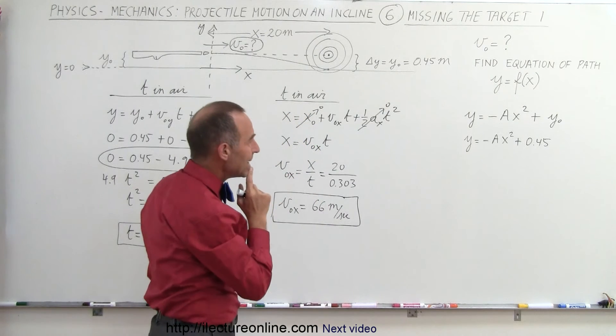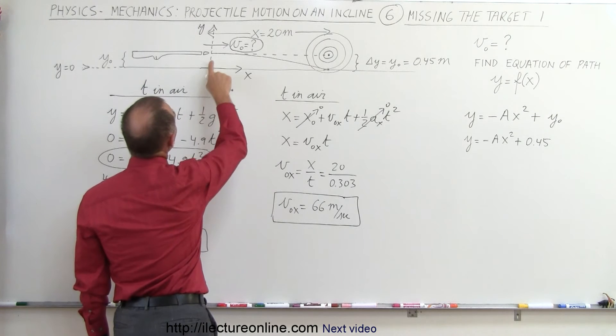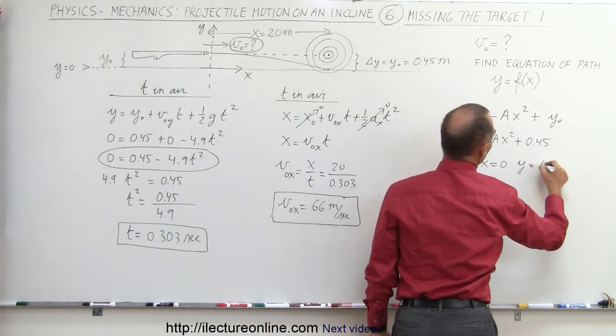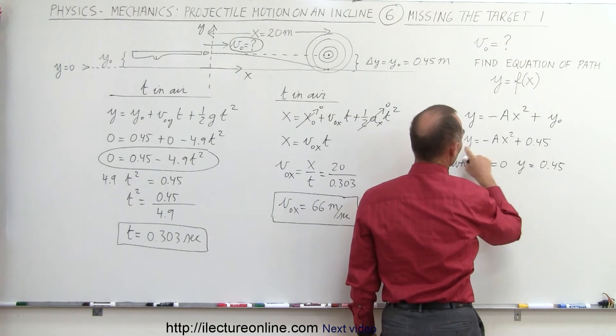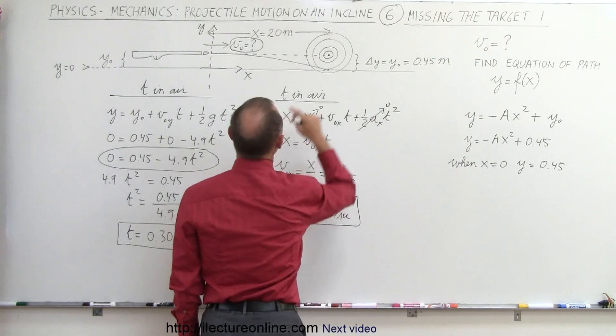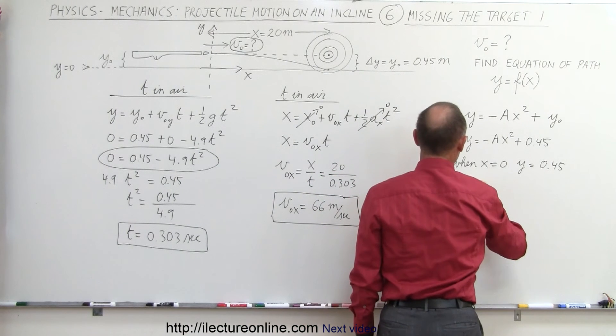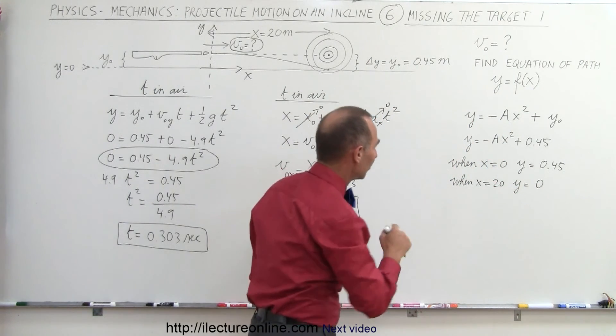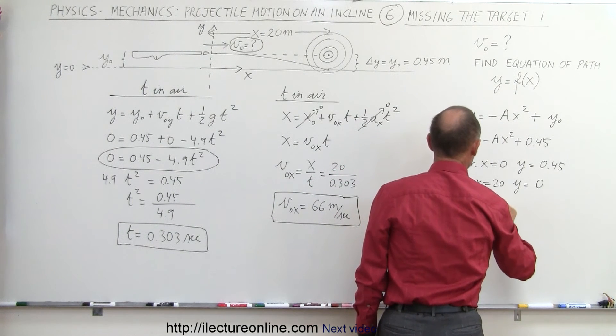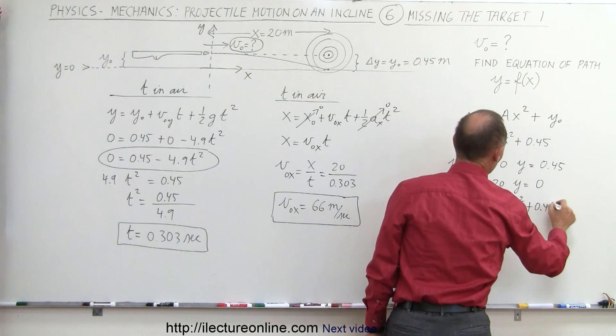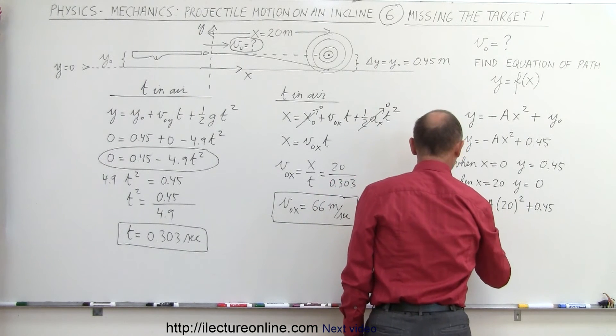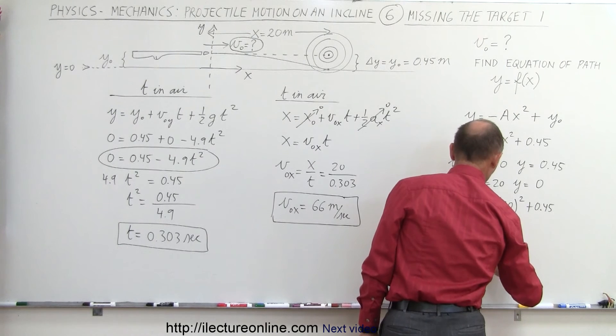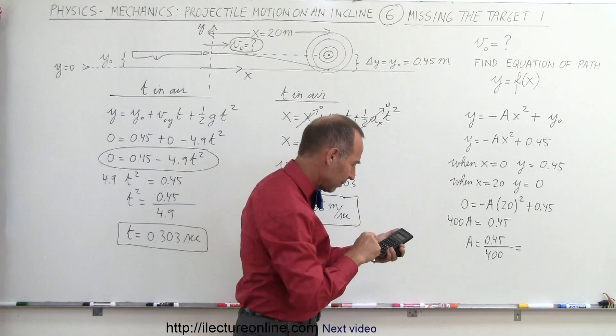Now we still need to find that constant a, and we can do that by plugging in some numbers. We know that when x equals 0, y equals 0.45. So when x equals 0, y equals 0.45, but then when I make that 0, well, y will be equal to that. That doesn't help. How about when x equals this number right here? Let's try that. That when x equals 20, then y equals 0. That's going to help us find that constant. Let's plug in those numbers. So we get 0 is equal to minus a times 20 squared plus 0.45. Moving that across, we get 400 a equals 0.45, and finally a equals 0.45 divided by 400. Let's do that one. 0.45 divided by 400 equals, we get 0.001125.